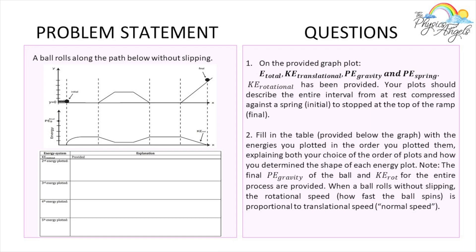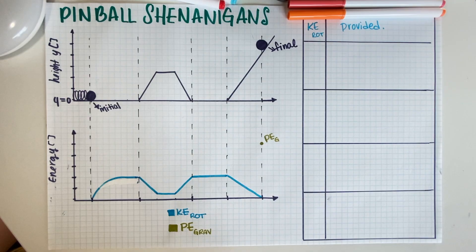This is the problem we're working on today. We have a ball rolling along a path without slipping. We have to plot the total energy, the translational kinetic energy, gravitational potential energy, and the spring potential energy. The rotational kinetic energy has already been provided. Our plots should describe the entire interval from rest compressed against the spring to stopped at the top of the ramp. We also need to fill in the table explaining our choice of plot order and how we determined the shape of each energy plot.